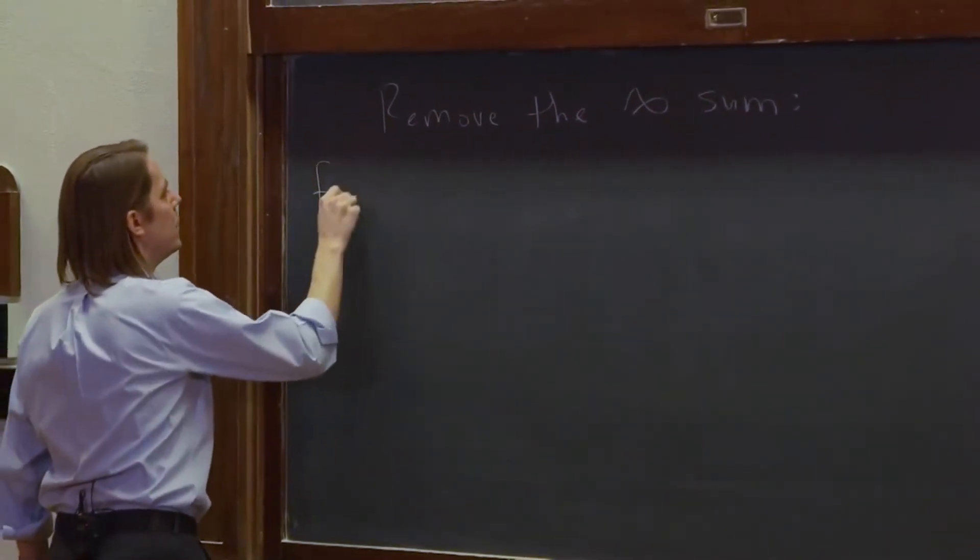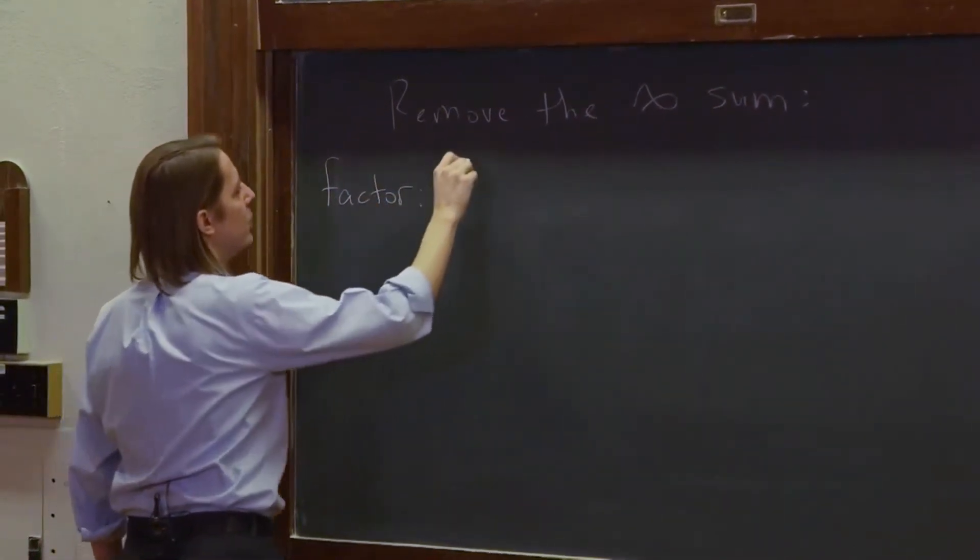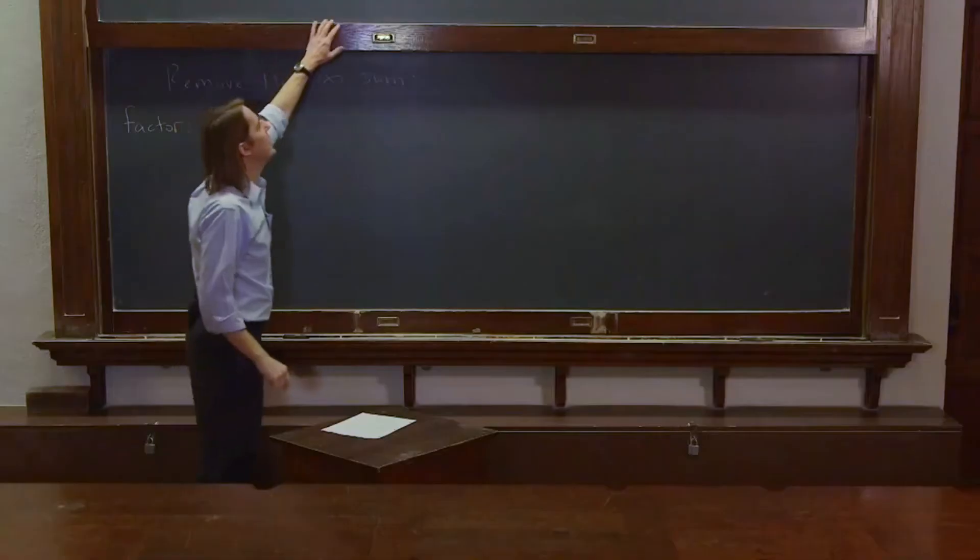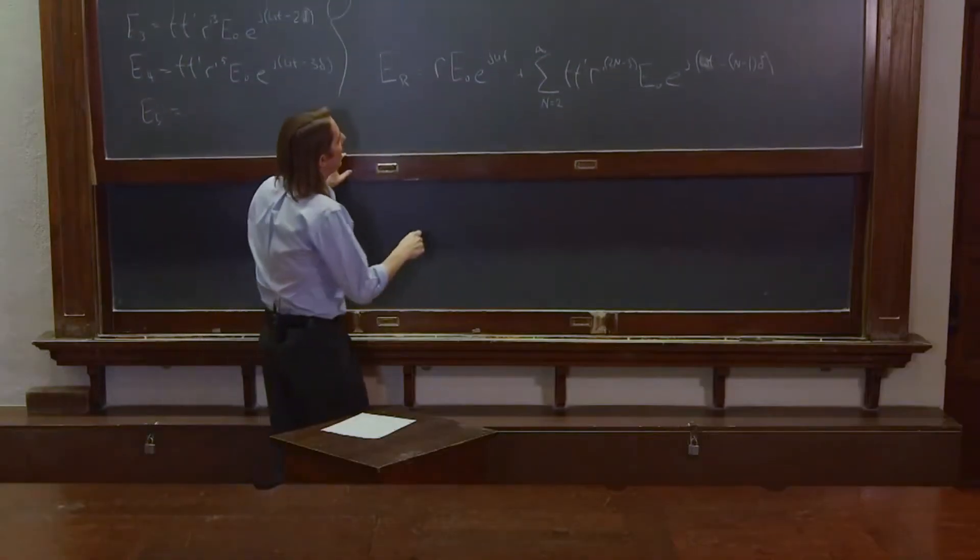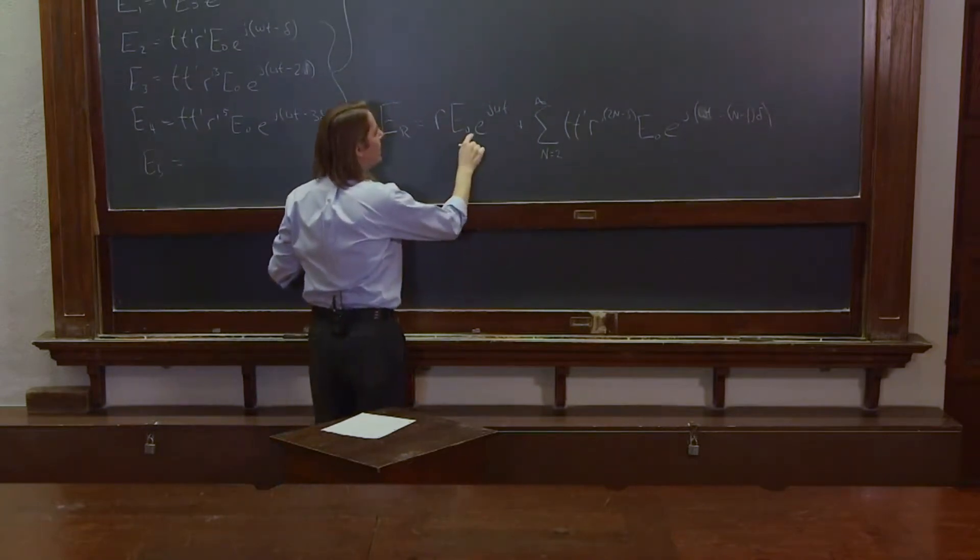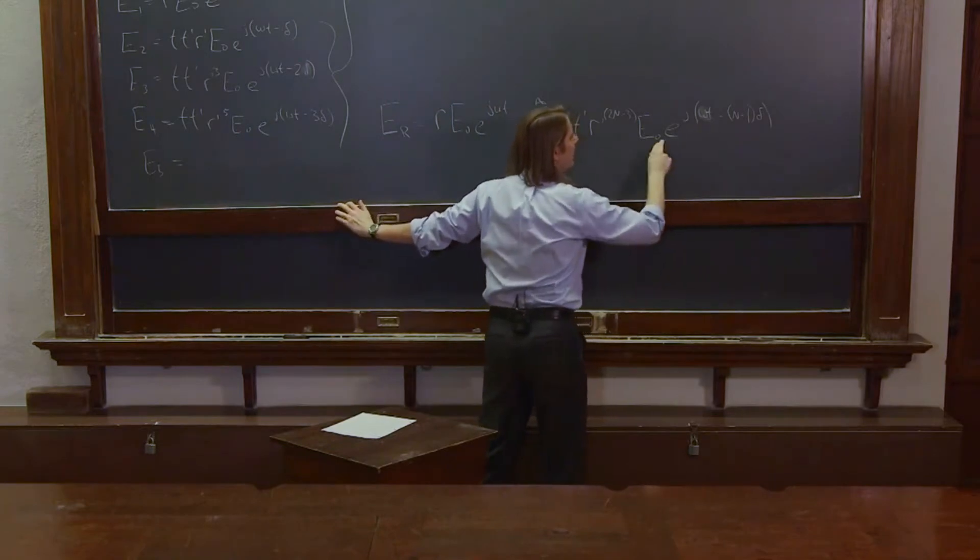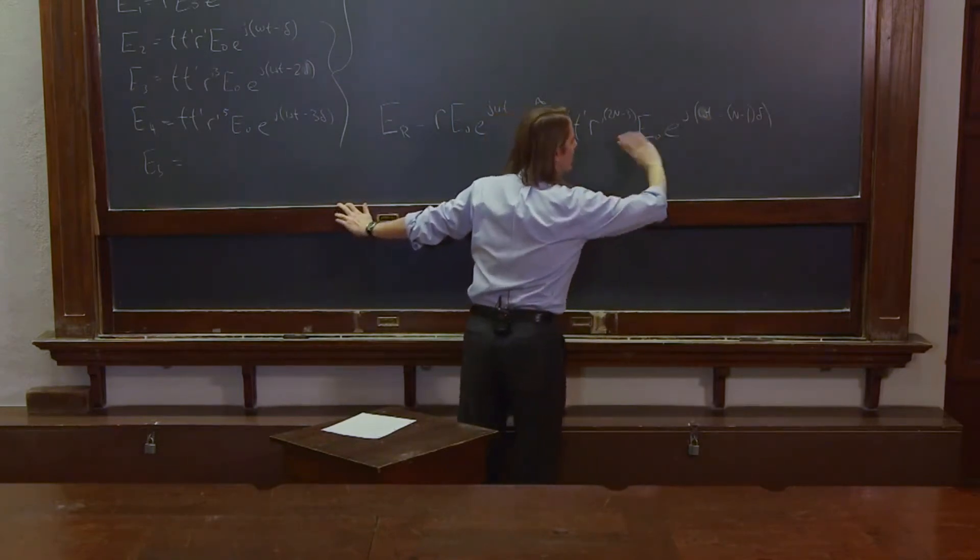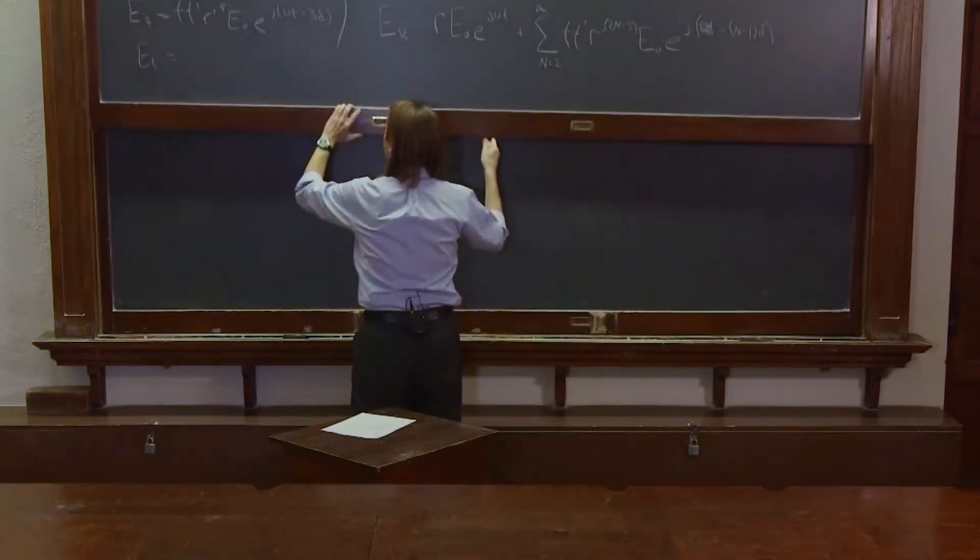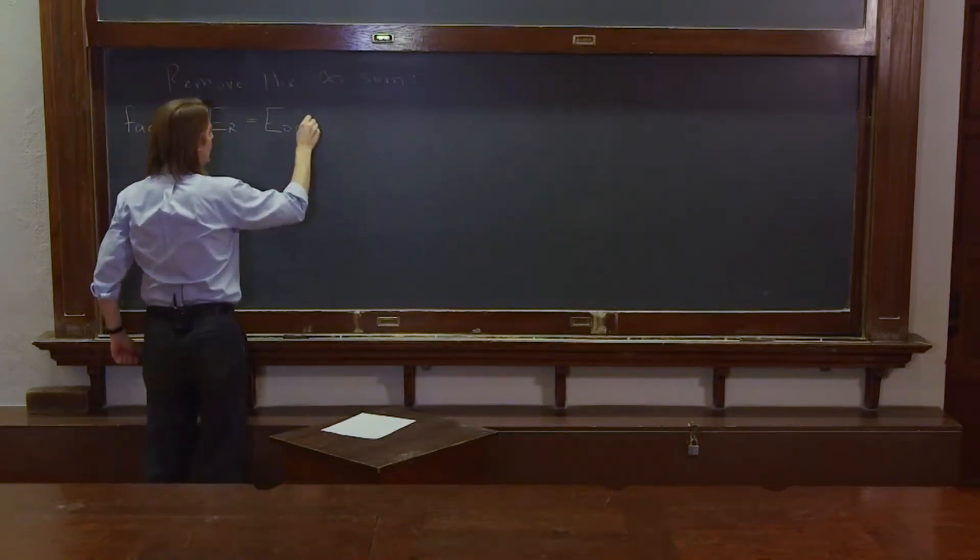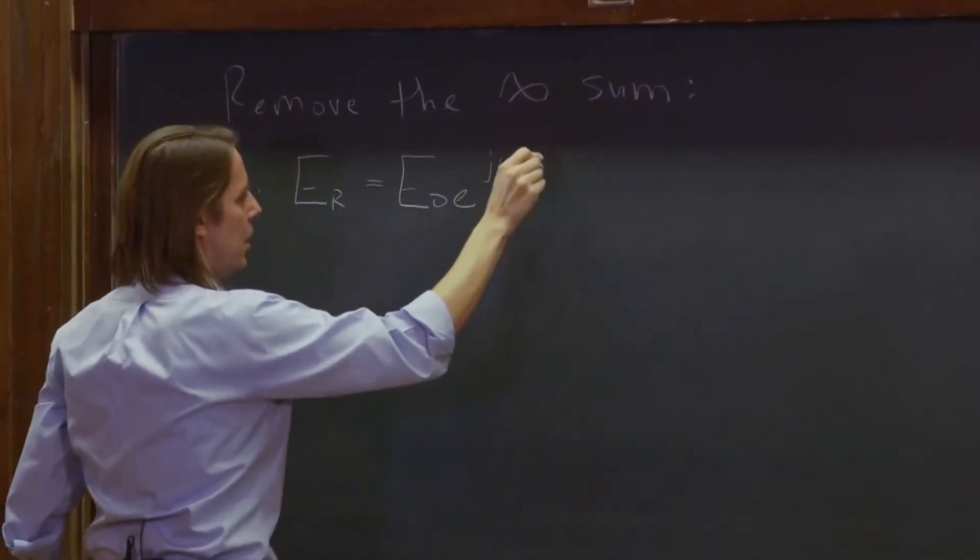So first thing we're going to do is factor. We could say E_R equals, and if we look at this, the obvious thing to factor is the E naught E to the J omega T in this term, and E naught E to the J omega T in that term. That will come right out. It'll leave the other exponential parts. So it's equal to E naught E to the J omega T.